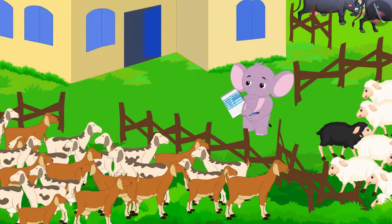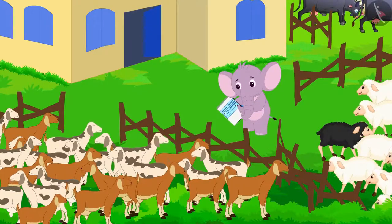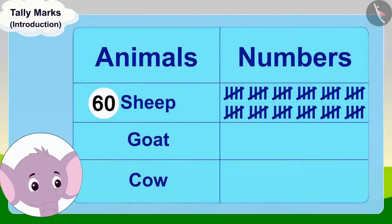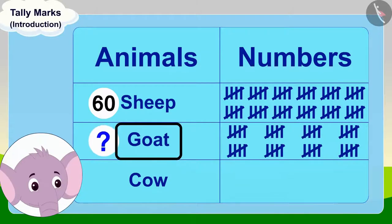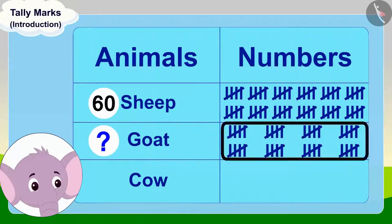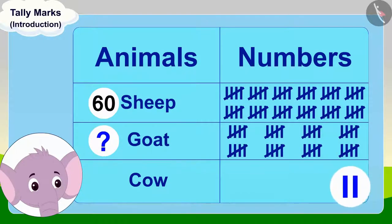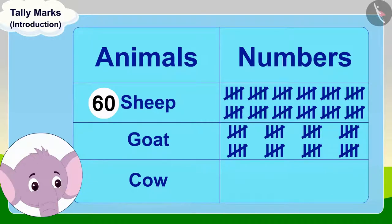Now Appu started counting his goats and drew tally marks for them in his table. Can you tell how many goats Appu has in total? You can stop the video and find the answer. That's right — Appu has forty goats.